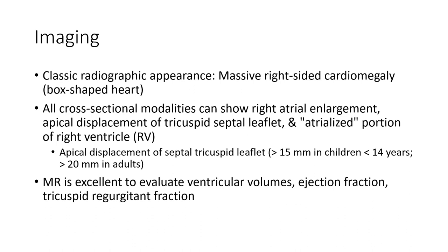Classic radiographic findings include massive right-sided cardiomegaly. On cross-sectional modalities, there is an enlarged right atrium with apical displacement of the tricuspid leaflets. Apical displacement exceeds 15mm in children under 14 years and more than 20mm in adults. MRI is excellent for evaluating ventricular volume, ejection fraction, and tricuspid regurgitation fraction.